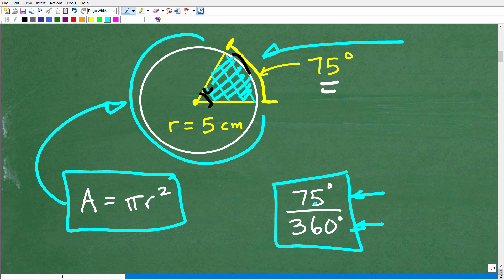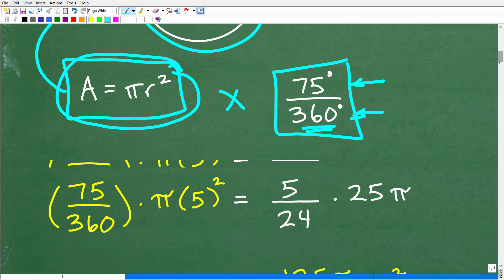So the way you find the area of a circle is to get the area of the complete circle, and then just multiply it by this percent or this fraction. So here, again, we're working with degrees. This is 75 degrees, we know a complete circle is 360 degrees. No problem there, so we just go ahead and do the actual math.